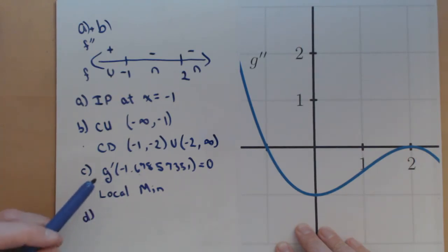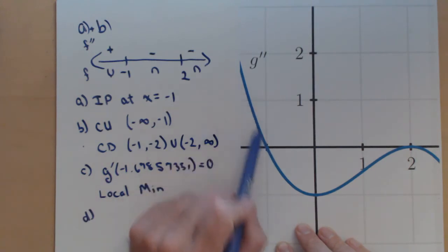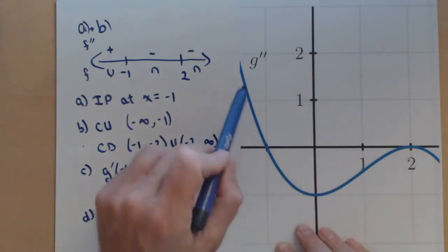Finally, if we had to determine what the degree of g would be, well notice, with what we see of g double prime, we have a third degree polynomial.